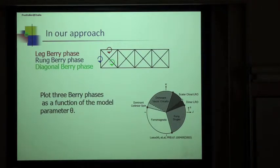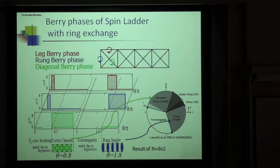In our approach, we can define the three Berry phases. One is a leg Berry phase, using the local twist here, and the rung one and the diagonal one. The result is like this one. The main point is the Berry phase itself is quantized to π or zero in the whole range. In the rung singlet phase here, only the rung Berry phase is π and the others are zero. The rung singlet phase is identified as a Berry phase.